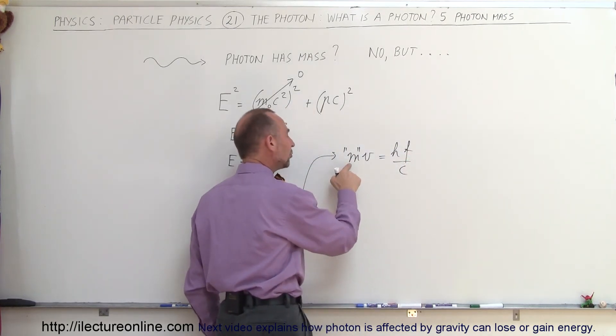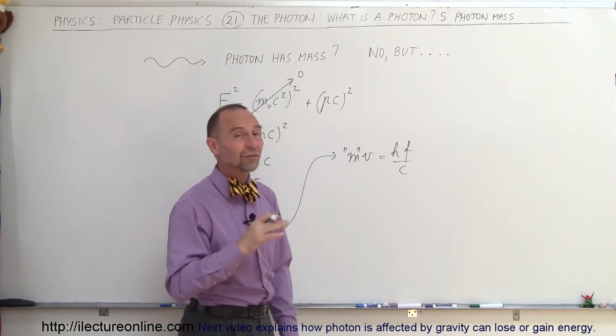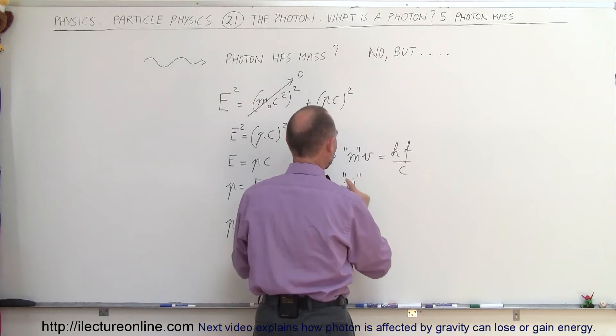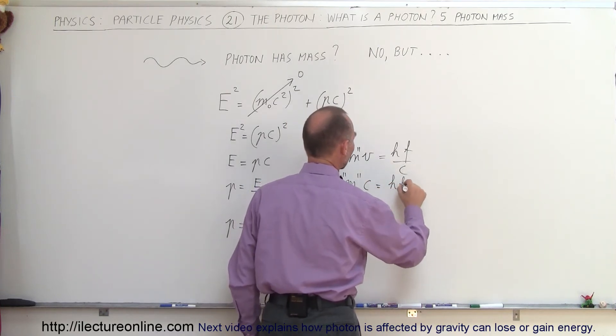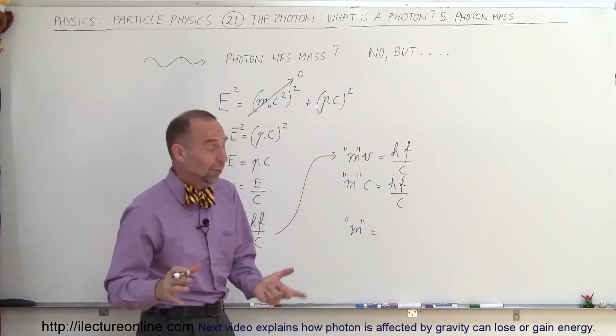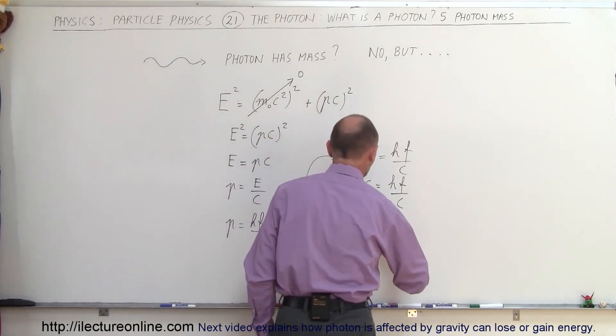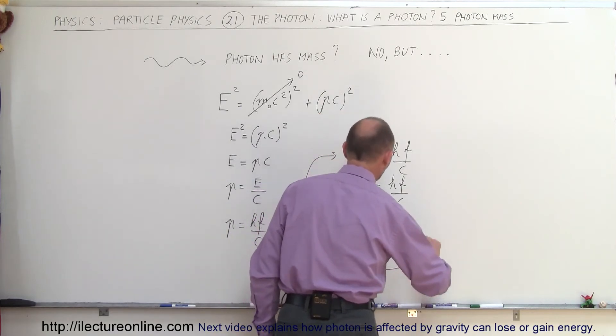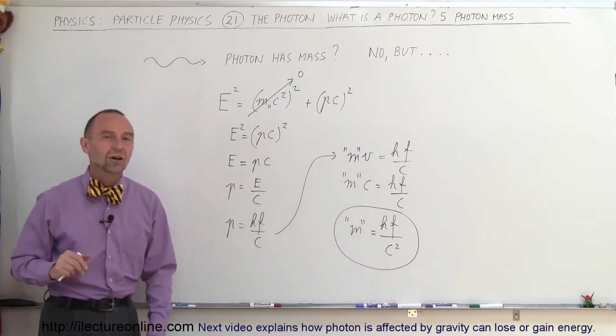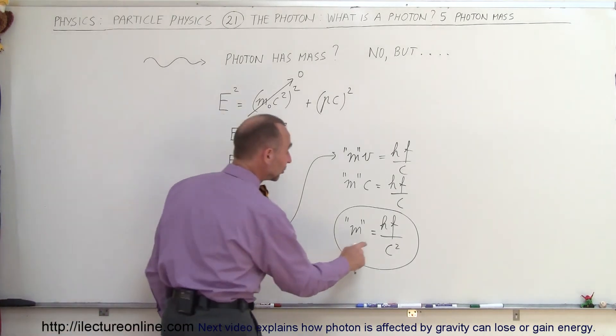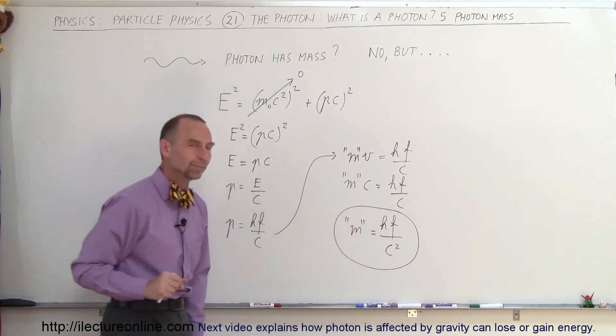So we'll write MV equals HF divided by C. And of course, we know that photons move at the speed of light. So in this case, the velocity is the speed of light. So we can say that the mass of a photon, of course, again in quotation marks, times C is equal to HF divided by C. Moving the C down there, we can then say that the mass, or the fictitious mass, if you want to call it that, is equal to the Planck's constant times the frequency divided by C squared. So there's what we would call the equivalent or the fictitious mass of a photon. It acts as if it has that mass. And we can say that that mass is equal to HF divided by C squared.